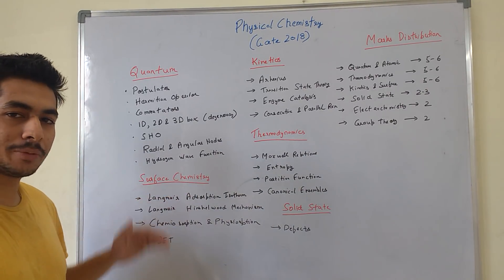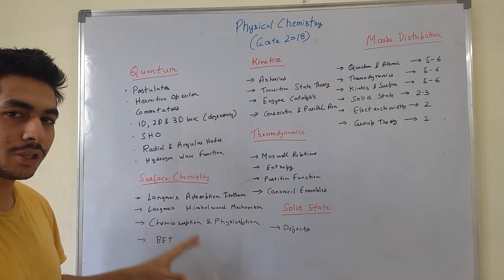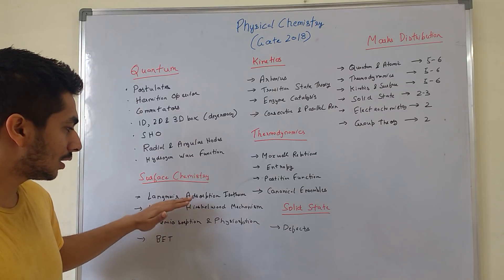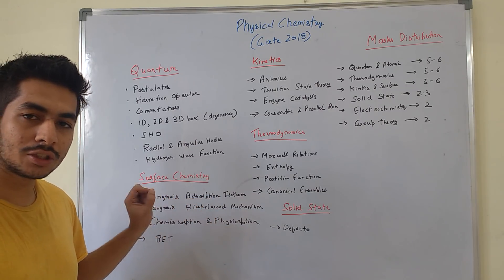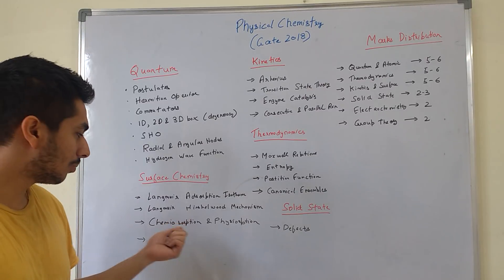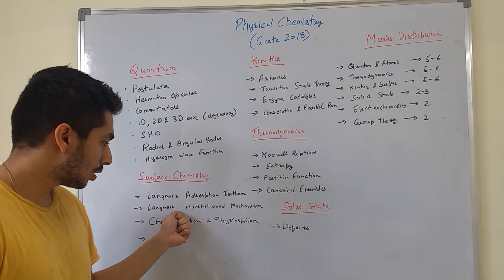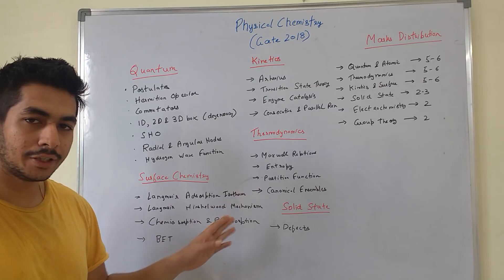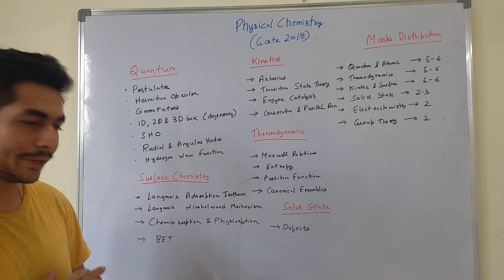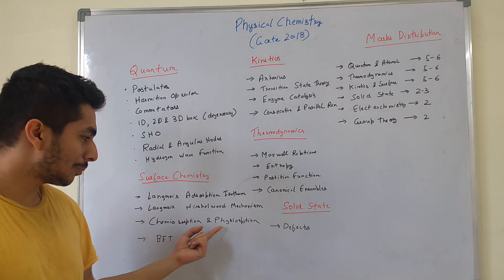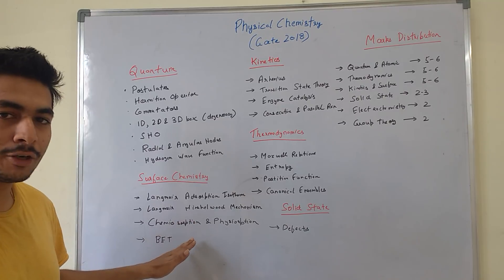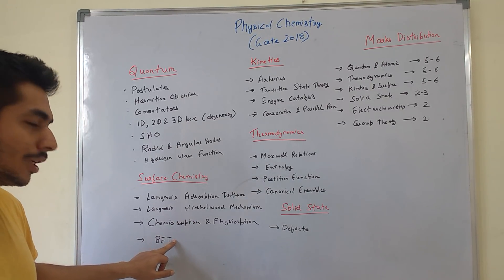Surface chemistry is a sure-shot 2 to 3 marks topic. If you do these four easy topics you are definitely going to get those marks. First is the Langmuir adsorption isotherm — a numerical on this has been coming for the last three years, so it is very important. Along with that, do the Langmuir-Hinshelwood mechanism; I have a 20–25 minute video on that covering four mechanisms. You should also know the difference between chemisorption and physisorption, and if you have the time, the BET isotherm.